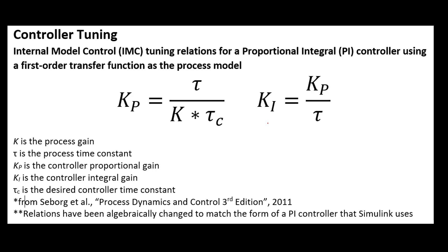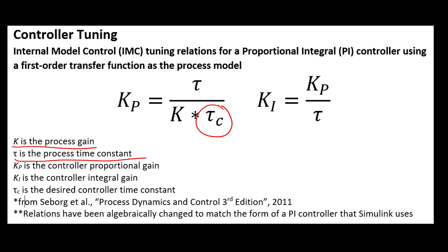After approximating our system as a first-order transfer function and identifying the process gain and time constant, we need to pick one more parameter: tau_c, the desired controller time constant. Our natural process time constant is roughly 30 seconds. If we want our car to accelerate faster and be more aggressive, we would choose a tau_c smaller than 30 seconds — maybe 15 seconds.